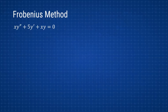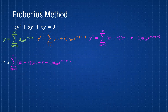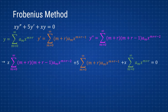Let's solve an example: x times y double prime plus 5y prime plus x times y equals zero. As always, my first step is to write the definitions for the Frobenius method — y, y prime, and y double prime. These are usually given by the book or you can memorize them. Then, just like power series, I substitute y double prime, y prime, and y with their corresponding definitions.